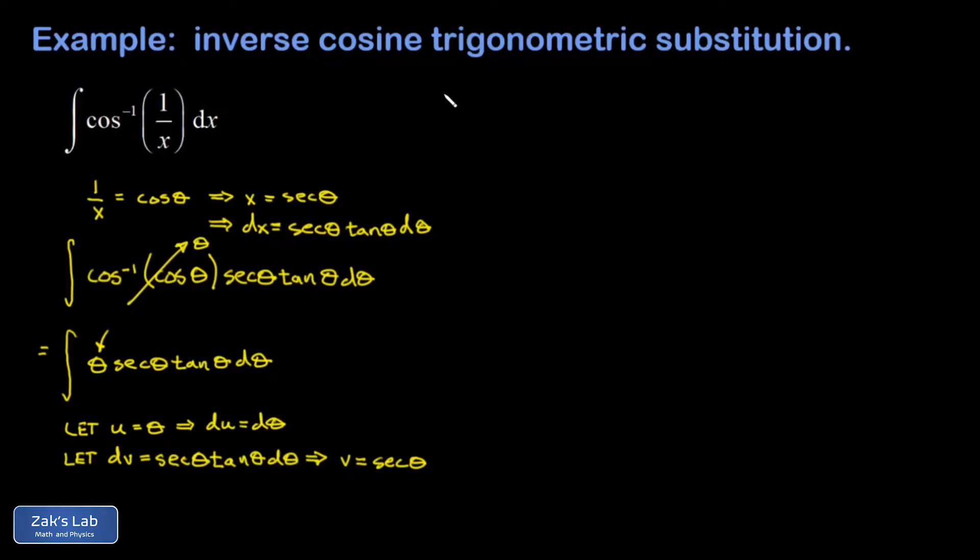Now we apply the integration by parts formula. And I get u times v, that's theta secant theta, minus the integral of v du. And the integral of secant is just one you have to memorize. That's the natural log of the absolute value of secant theta plus tangent theta. So there's our antiderivative,